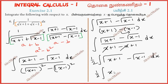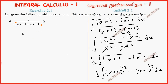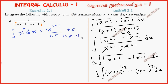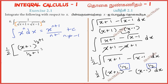Further integral: x plus 1 power half, minus x minus 1 whole power half. This is the formula: x power n dx equals x power n plus 1 by n plus 1 plus C, where n is not equal to minus 1. Applying this formula: x plus 1 whole power half plus 1 by half plus 1, minus x minus 1 whole power half plus 1 by half plus 1.